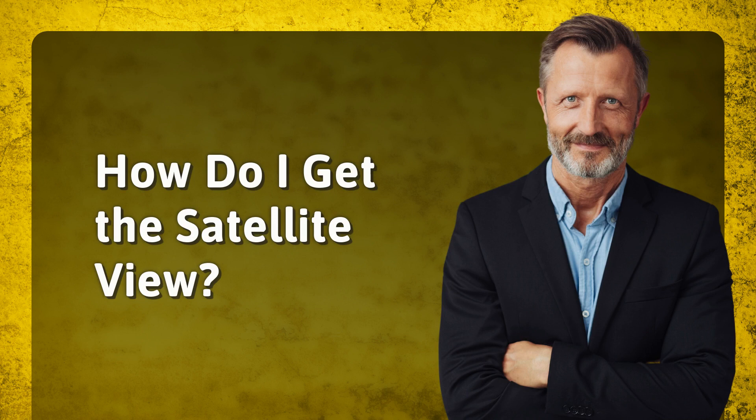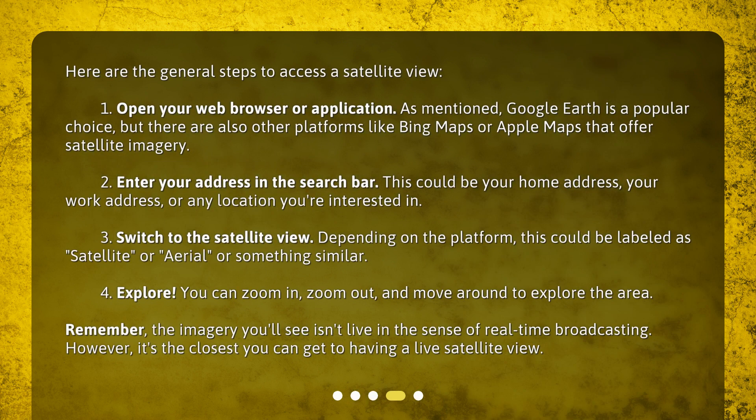How do I get the satellite view? Here are the general steps to access a satellite view. Step 1: Open your web browser or application. Google Earth is a popular choice, but there are also other platforms like Bing Maps or Apple Maps that offer satellite imagery. Step 2: Enter your address in the search bar. This could be your home address, your work address, or any location you're interested in.